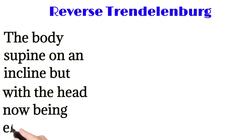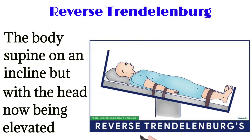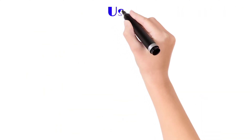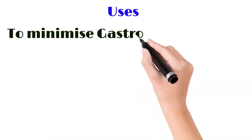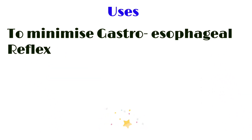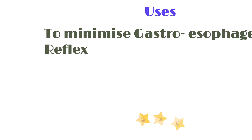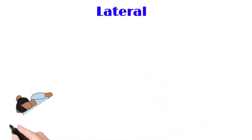Next is the reverse Trendelenburg position — this is opposite to the Trendelenburg position. The body is supine on an incline but with the head elevated. Its uses are to minimize gastroesophageal reflux and to prevent aspiration.